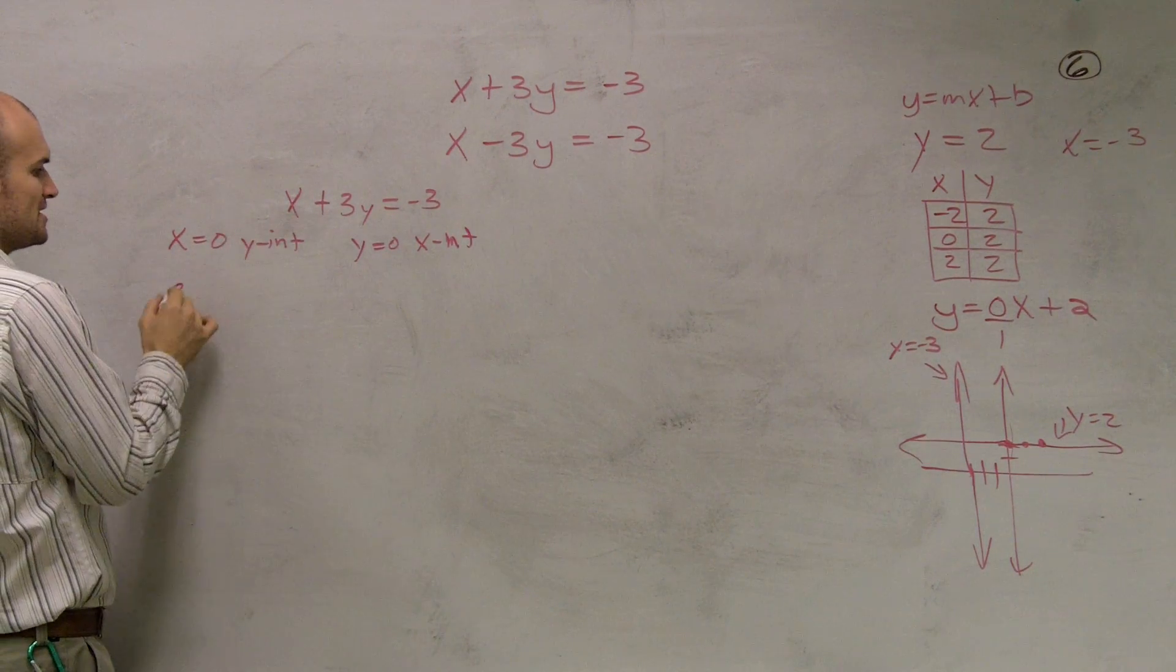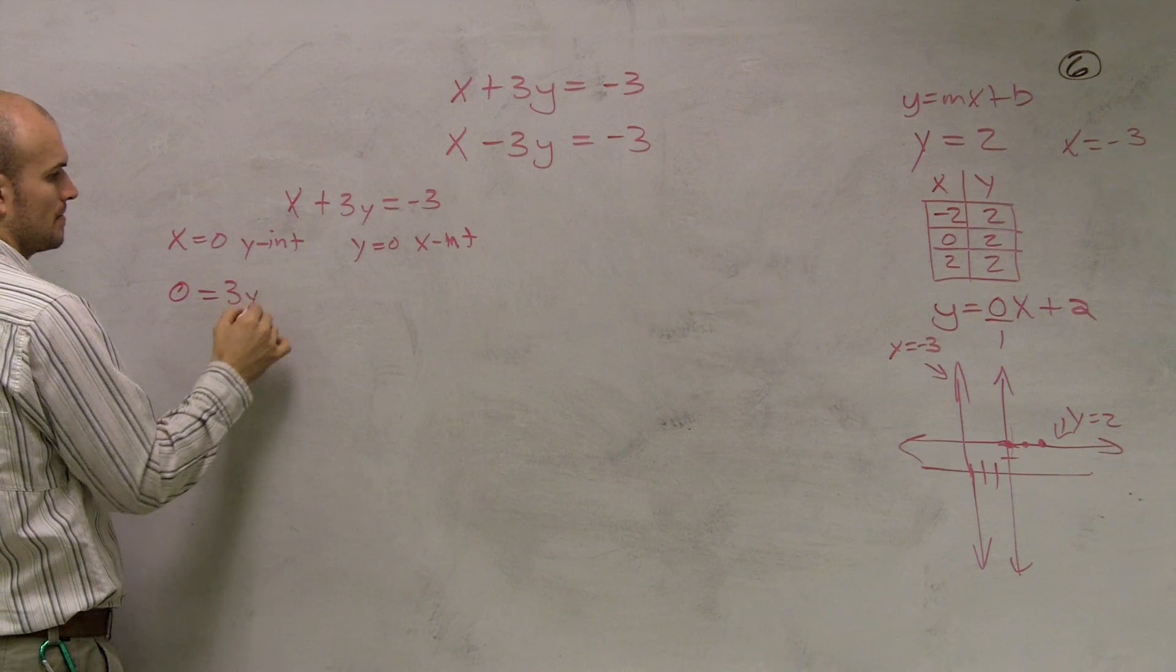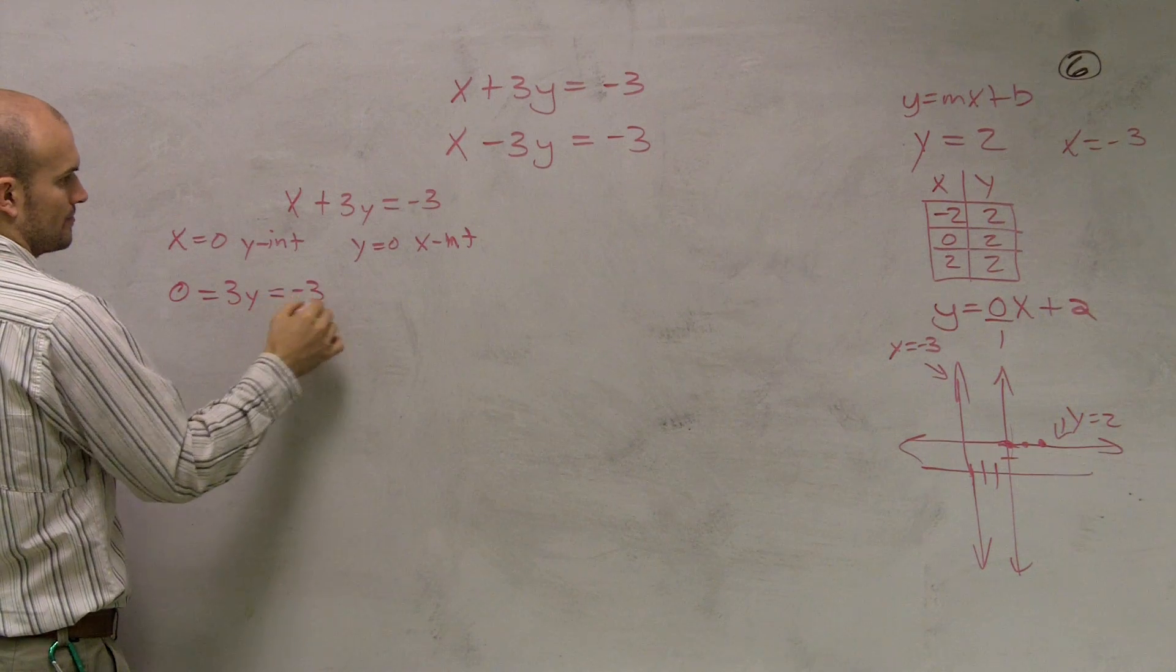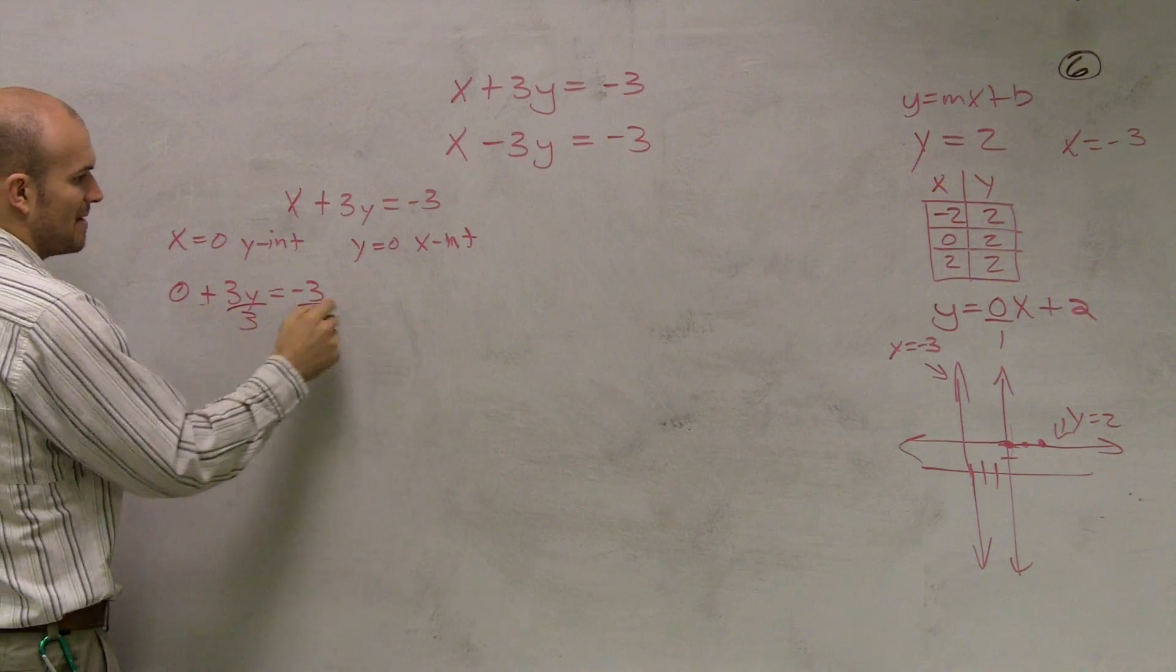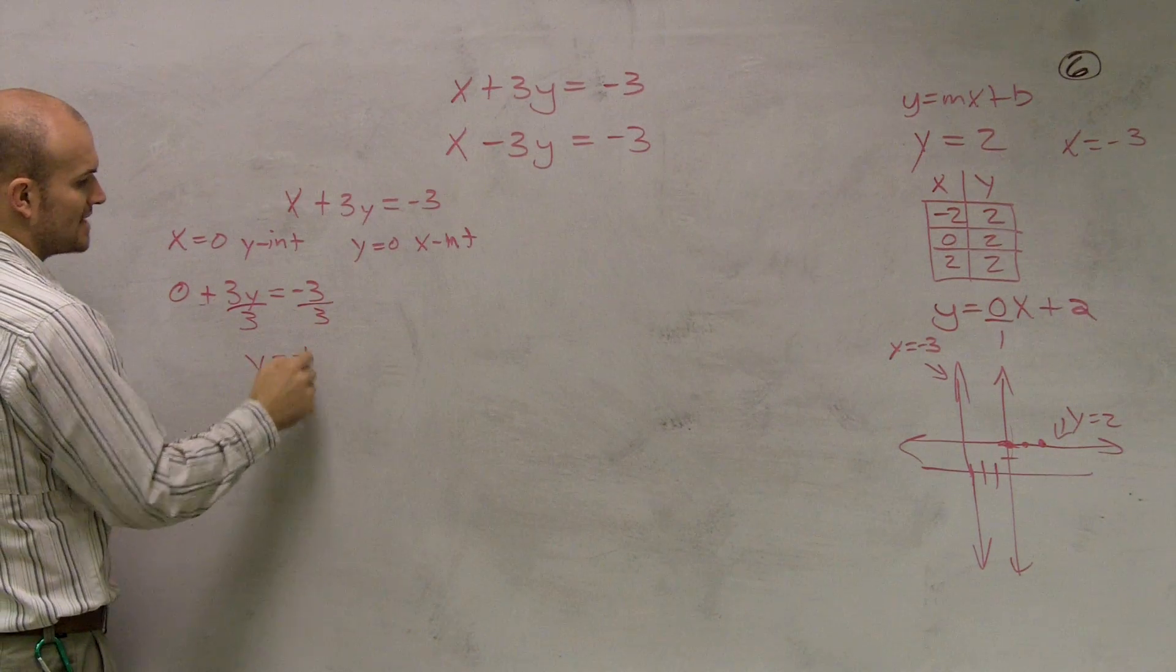Okay. So all I do is I put zero in for X, plus, and then what I do is I solve for Y. So I divide by three. So Y equals negative one.